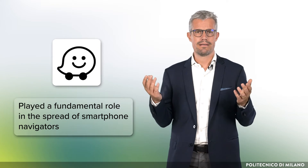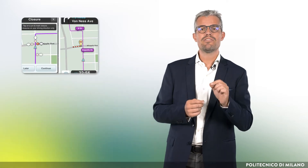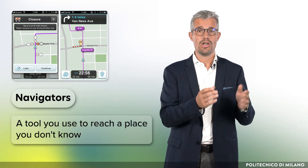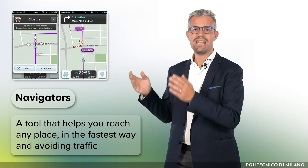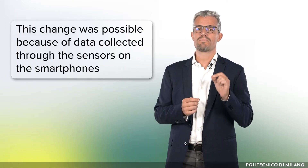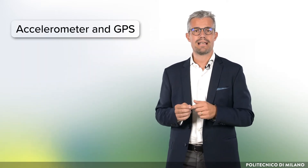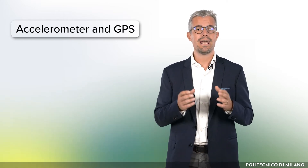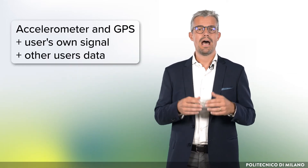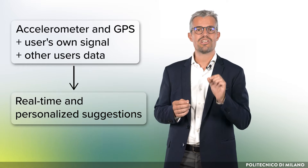A few examples. Waze — the app that played a fundamental role in the spread of smartphone navigation — transformed the concept of navigators from a tool you use only when reaching an unfamiliar place, to a tool that helps you reach any destination, even those you know well, in the fastest way while avoiding traffic. This change was possible because of the data collected through smartphone sensors. The accelerometer and GPS monitor the car's speed and, together with user signals and data from other users on the same road, allow Waze to generate real-time personalized suggestions.